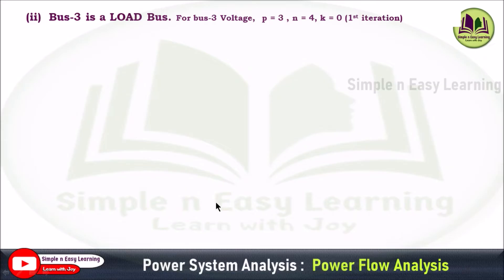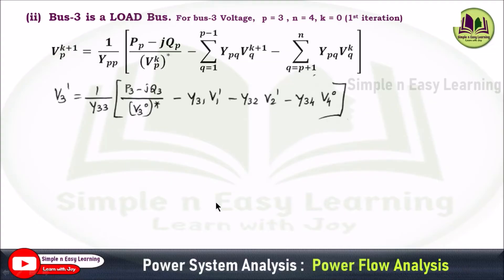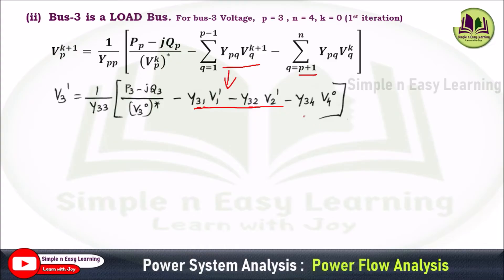Next, consider bus 3, which is also a load bus. Substitute P=3, n=4, k=0 in the formula. V3¹ = (1/Y33) × [(P3−jQ3)/V3⁰* − ...]. In the first summation, Q varies from 1 to P−1 = 1 to 2, giving two terms: Y31·V1¹ and Y32·V2¹. In the second summation, Q varies from P+1=4 to n=4, giving one term: Y34·V4⁰.